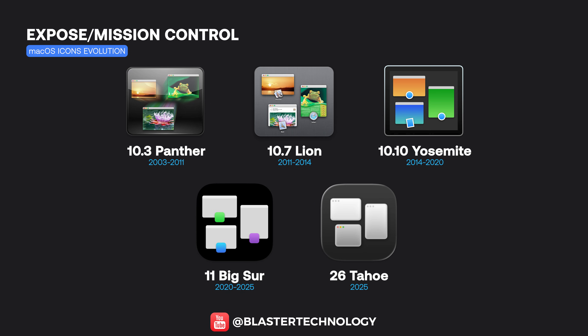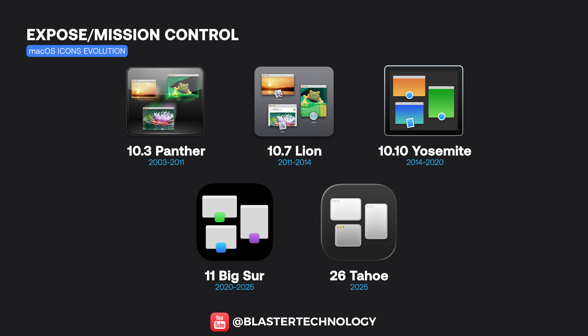The Exposé app icon first appeared in macOS 10.3 Panther as a wall of windows with images. It was visually refined over time, and with the Lion version it was renamed Mission Control and received a more structured representation of spaces. It was simplified and abstracted in Yosemite, then redesigned in a more minimalist style in Big Sur. The design in the Tahoe version feels the most balanced — I really like it.